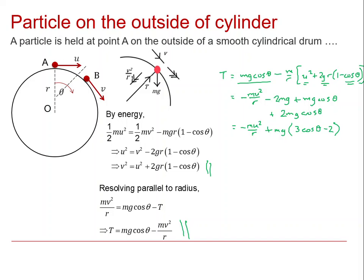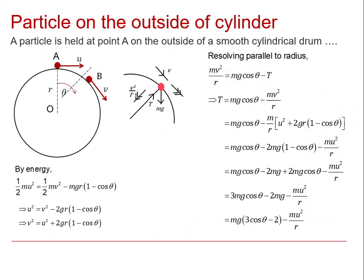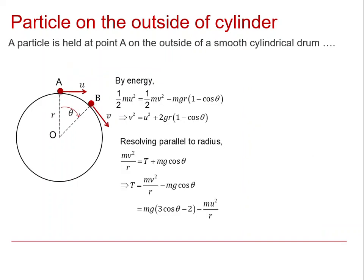It might be neater to put the minus mu squared over r after the positive term. So we've got the energy equation carried forward, the tension equation from resolution, and then the expression with the substitution. Now we've got T in terms of the initial speed, which is what we're supposed to know, and the angle in general. What we're interested in now is what happens when T equals zero.